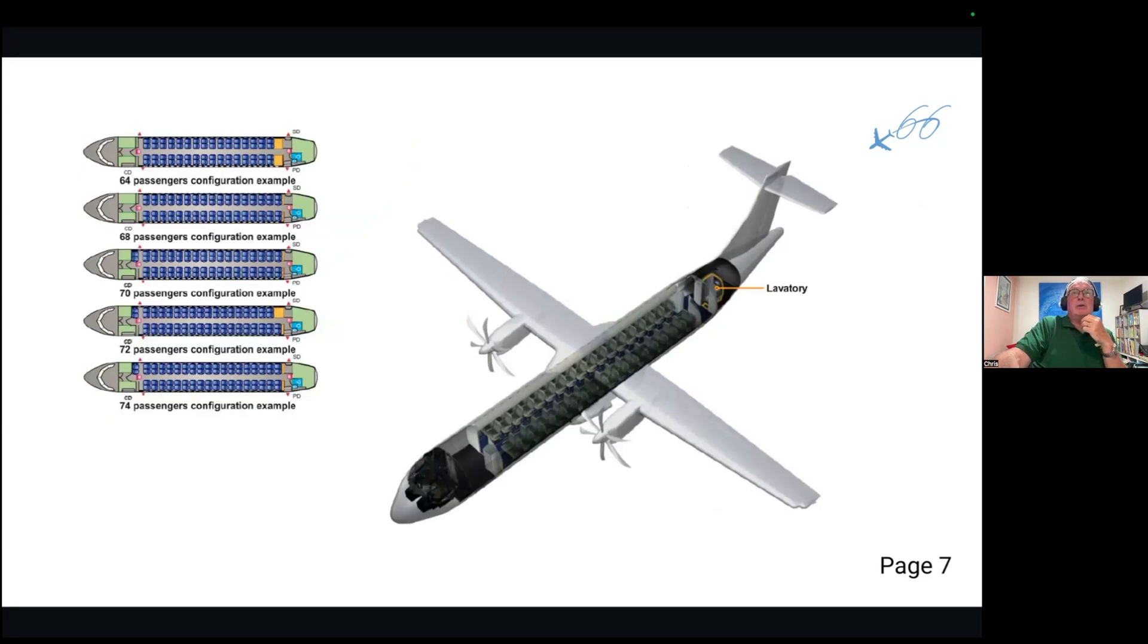The ATR-72 airframe comes in several passenger configurations, which can vary from 64 to 74 passengers. Obviously, for each seat, we have to sacrifice galleys, but it is purely operational and depends on the operator and the mission of the aircraft, how they use it, what they use it for.